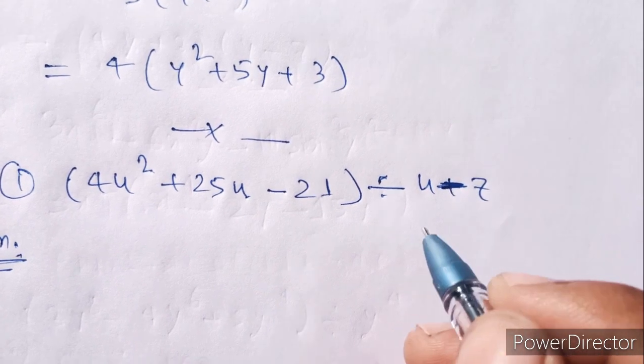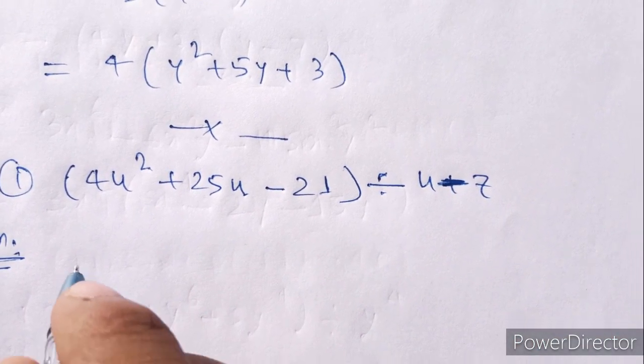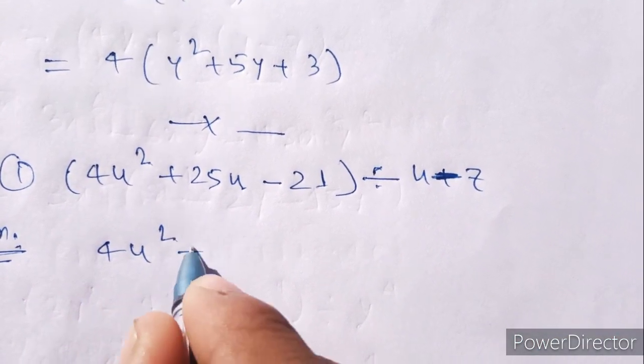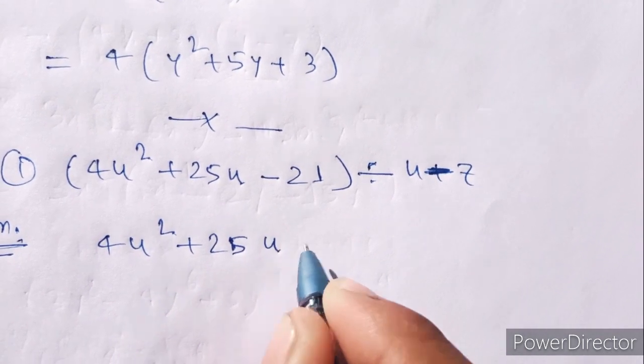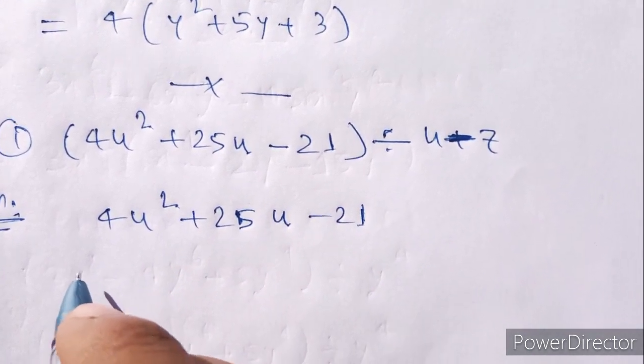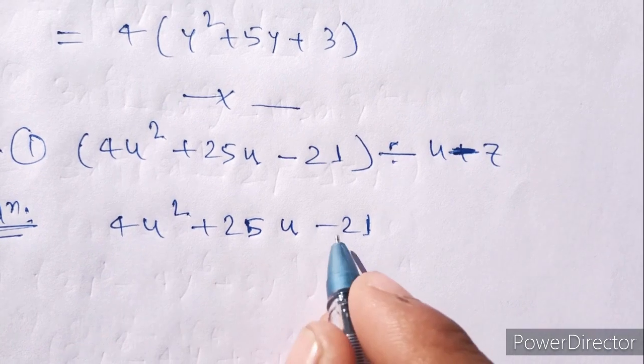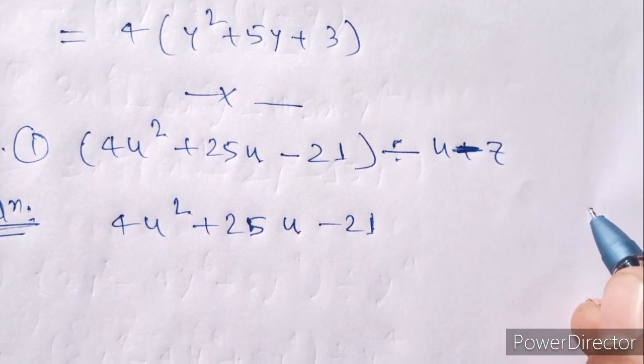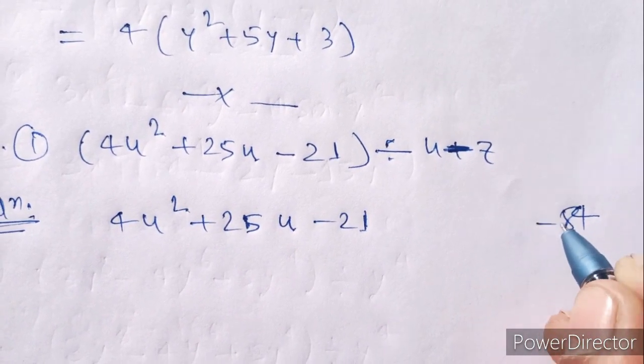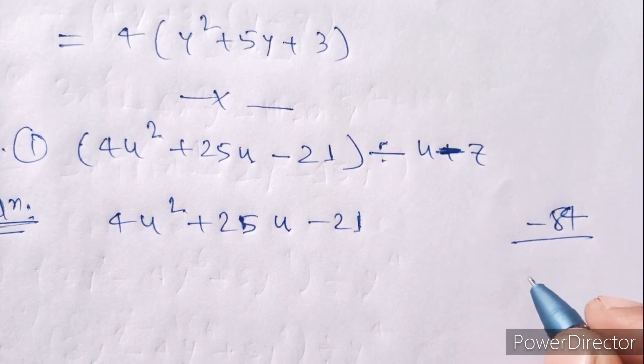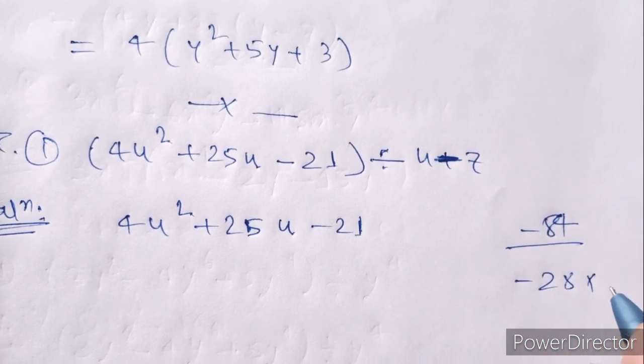4u² plus 25u minus 21. Factoring: 4 into 1 is 4, 4 into 2 is 8, minus 84. So minus 84 equals minus 28 into 3.